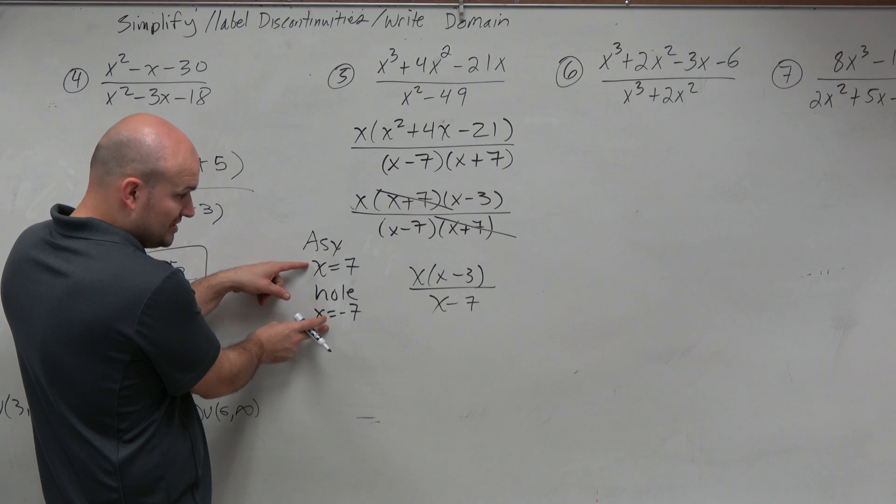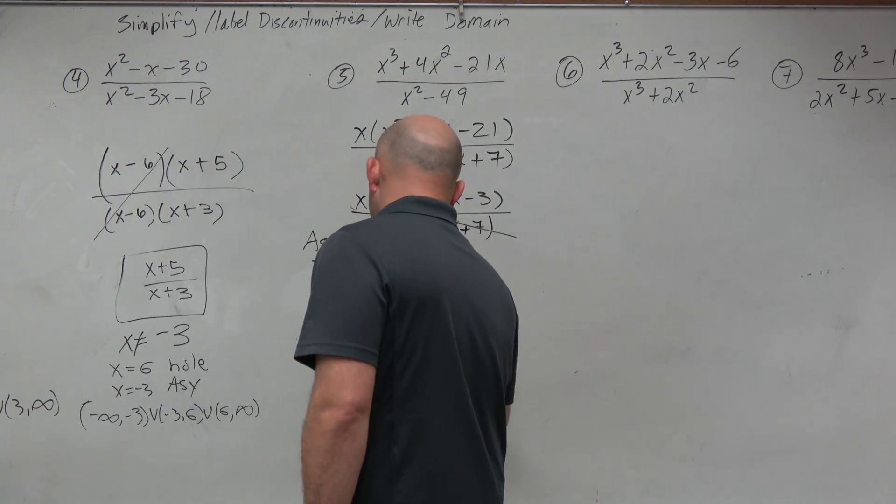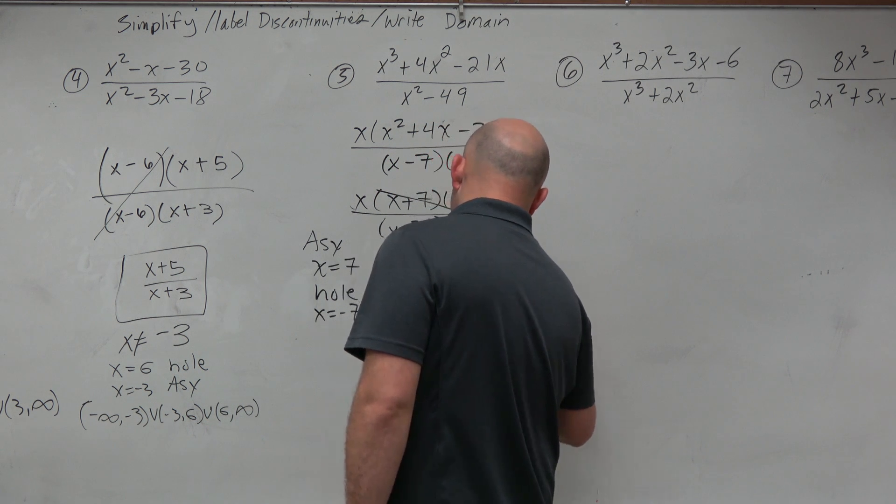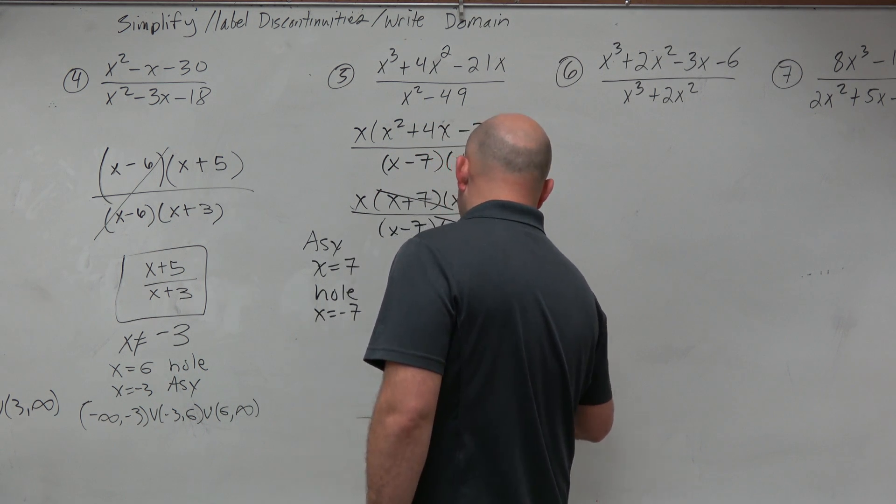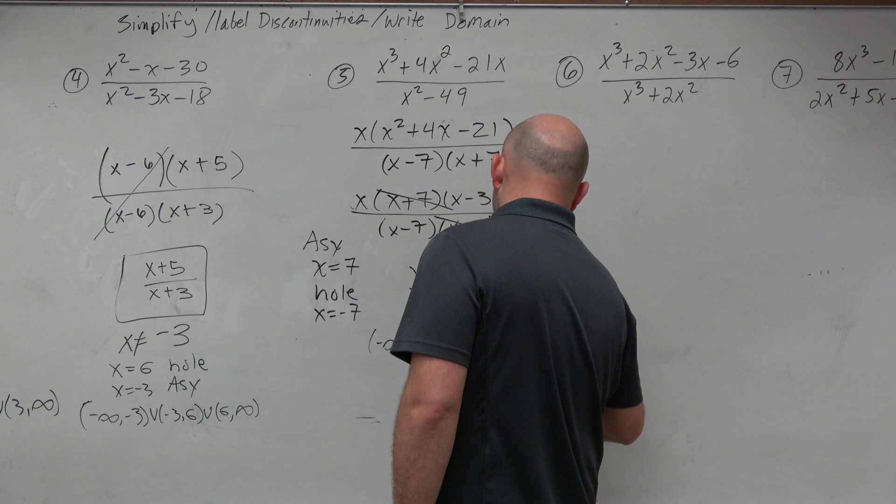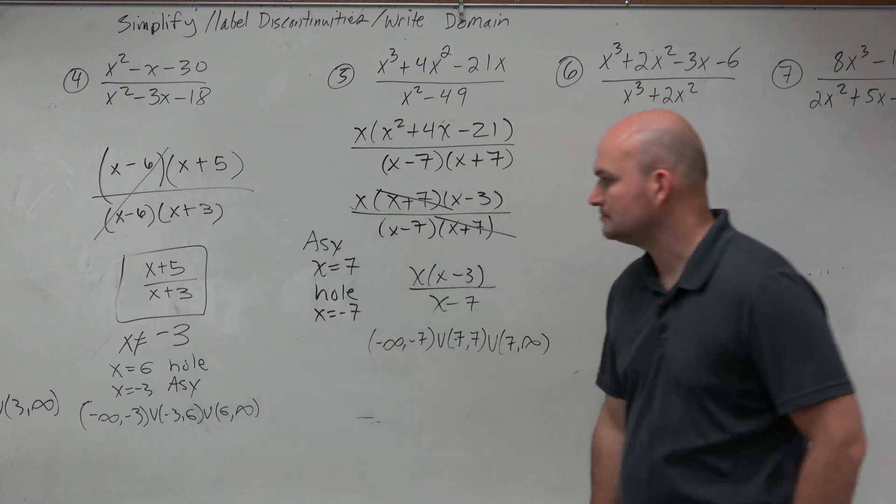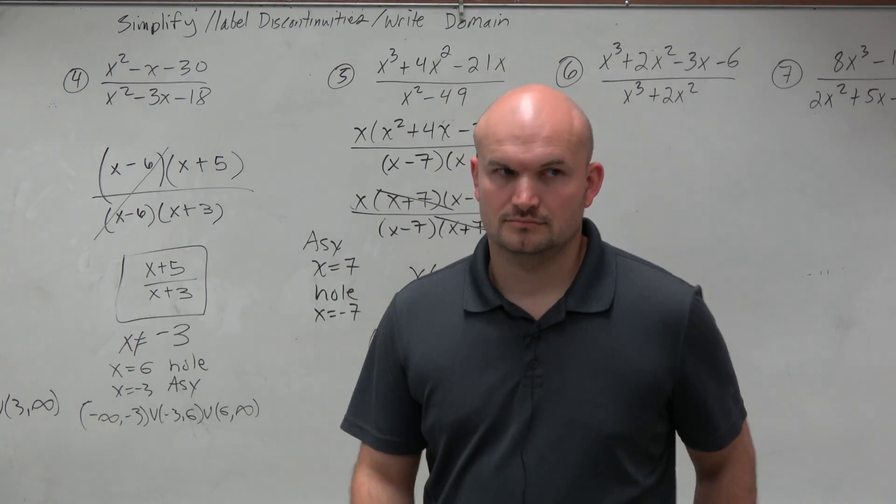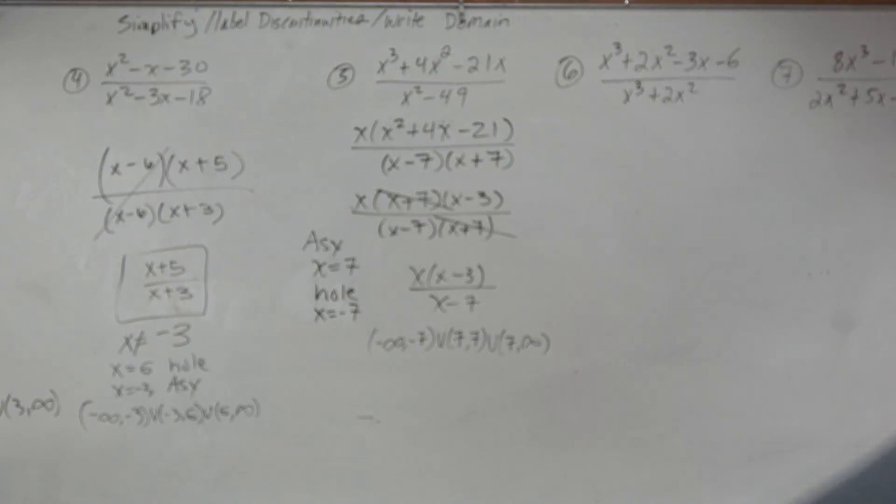The domain is all real numbers except for our two discontinuities. So it's going to be negative infinity to negative 7, union negative 7 to 7, union 7 to infinity. Alright.